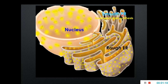Smooth endoplasmic reticulum is involved in lipid biosynthesis, supplying calcium to cellular functions, and drug metabolism. Rough and smooth endoplasmic reticulum are both connected with the outer membrane of the nucleus. These sac-like structures are termed cisternae, and inside the cisternae there is a lumen of the endoplasmic reticulum.